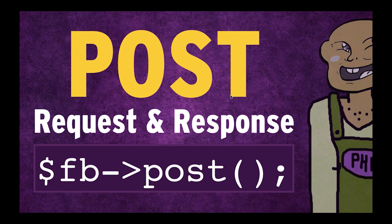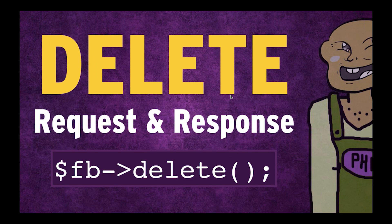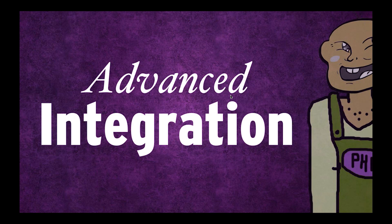Let's look at a quick example of a POST. In this post request, we post something to a user's timeline — it's very straightforward. We use the post method, send in the endpoint and the data, and it's on there if we have the right permissions. That is pretty simple. What about DELETE? Is it harder? Actually it's even easier — just use the delete method and send it the ID you want to delete. It's really, really simple.